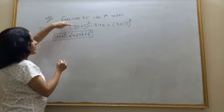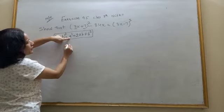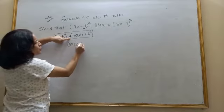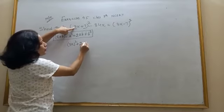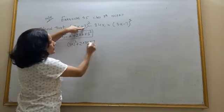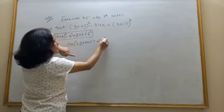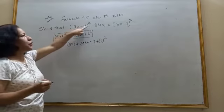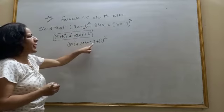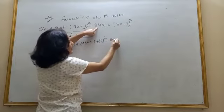So if I compare, 3x is equal to A. So it will be (3x)² plus 2 into first term 3x into B second term plus second term whole square. Now this minus 84x as it is.